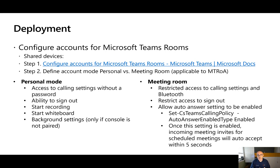In meeting room mode, other features get enabled and some things get restricted. For example, access to call settings and Bluetooth would be obscured behind an admin password, and the user won't be able to sign the system out without the admin password. An admin can also set a room system to automatically answer calls — you can see the Teams calling policy for auto answer, which can be set to enabled. Once that setting is enabled, incoming call invites will be auto accepted within a five-second period.